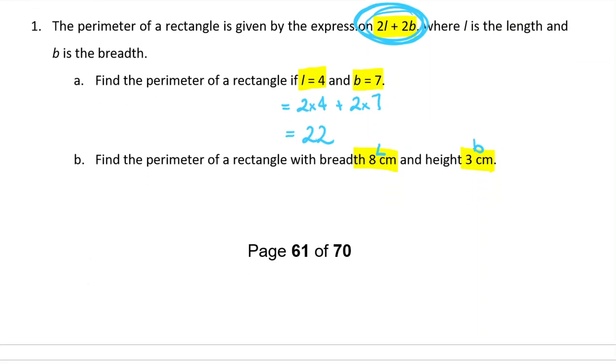Let's put them into the same expression as before, 2L plus 2B. So 2L is going to be 2 times 8, then plus 2B is going to be 2 times 3. And then we calculate that. And guess what? The perimeter is 22 again. This time I know that this is measured in centimeters, so I'm going to include the units in my answer.